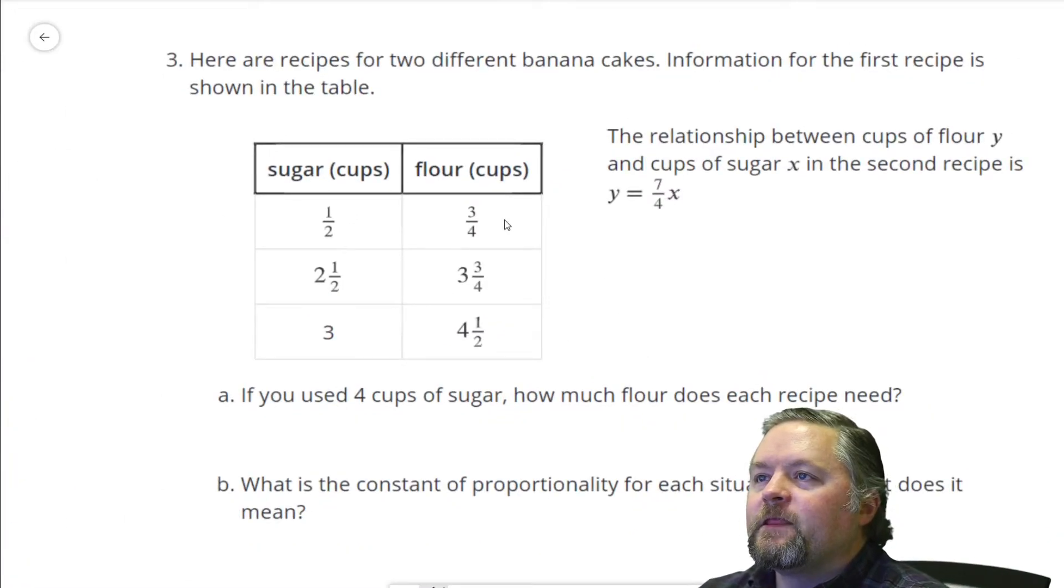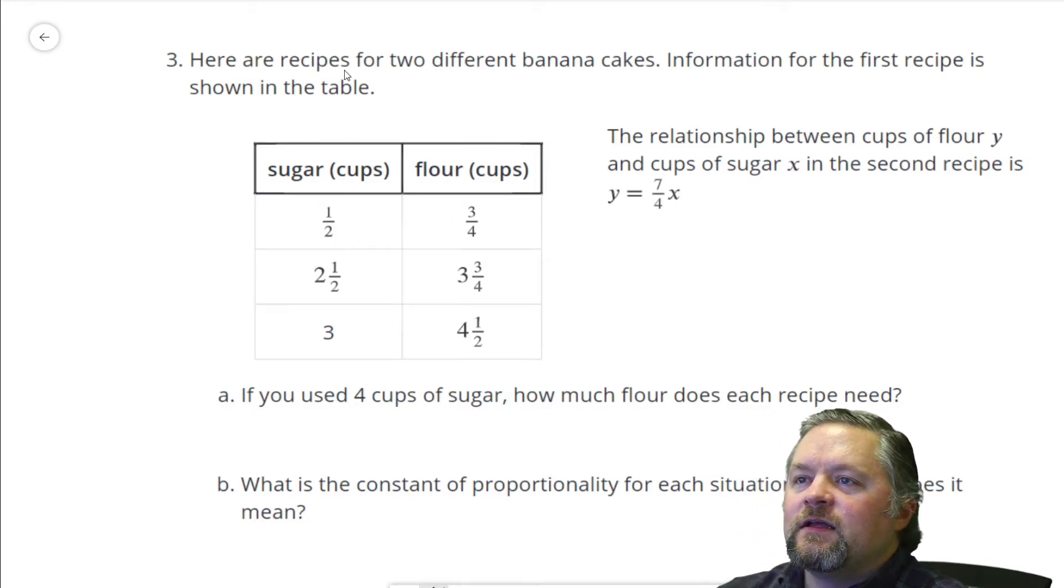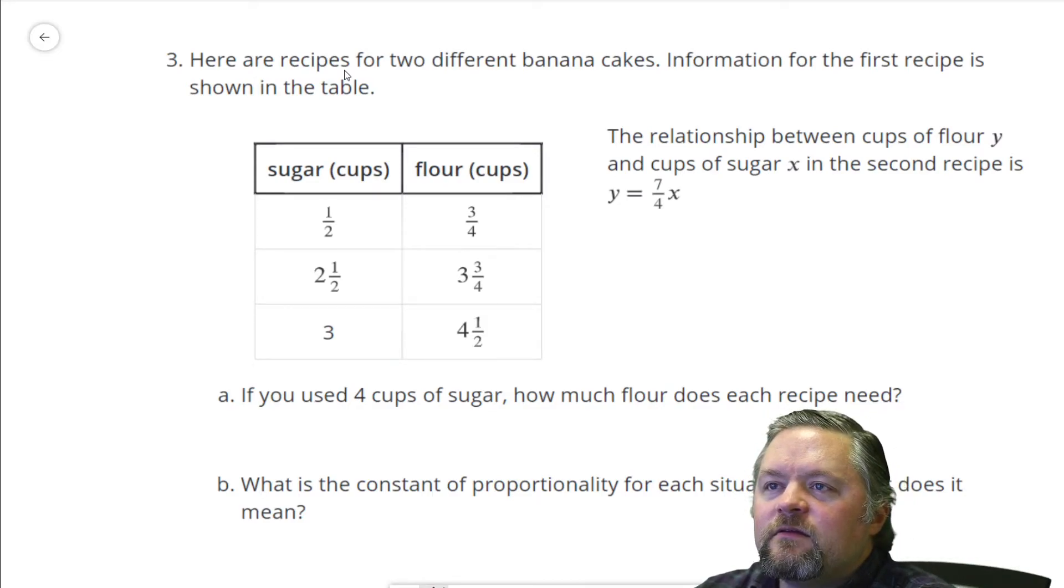Okaly-dokaly, what is next? Here are recipes for two different banana cakes. Information for the first recipe is shown in the table. We got sugar and flour, relationship between cups of flour y and cups of sugar x, and the second recipe is y equals seven over four x. Now for the other one, it looks to me like our slope, our rate of change, half a cup uses three quarters, three cups uses four and a half. That looks like it's one and a half times bigger. So this one would be y equals three over two, or one and a half x.